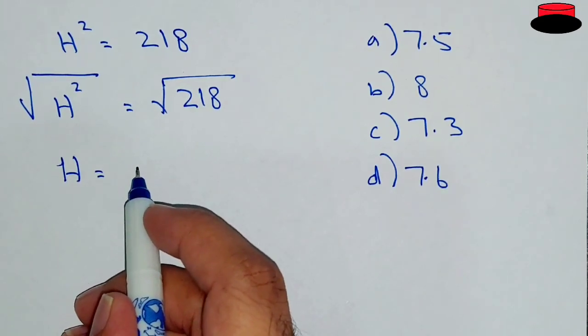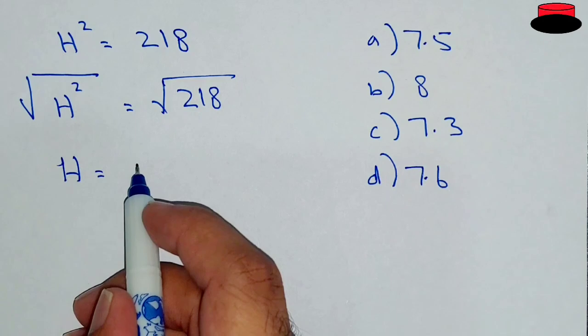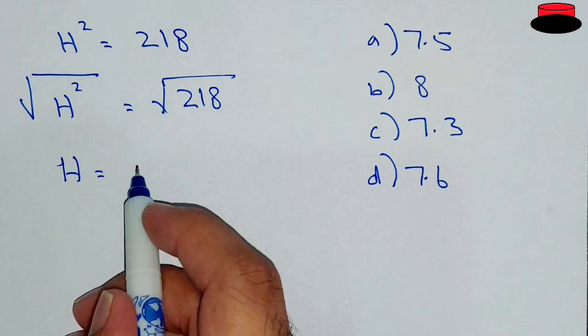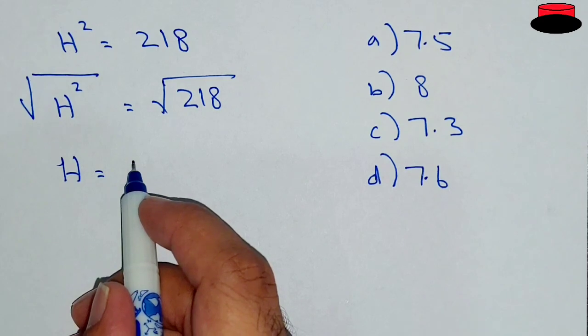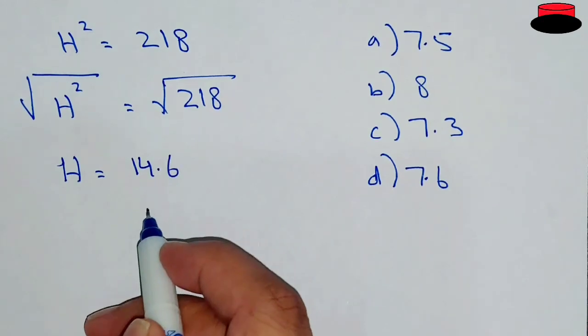So the radius must be less than 7.5, and the only option we have less than 7.5 is 7.3. So it can never be 8 and it can never be 7.6. So 7.5, the twice of 7.5 will be 15, and it is less than 225.